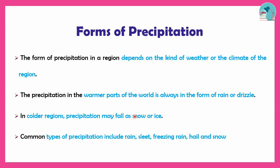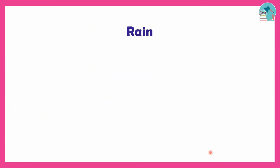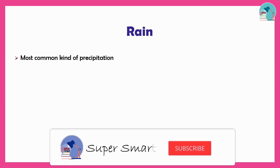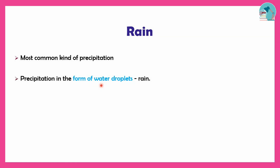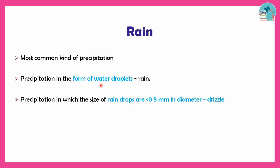Common types of precipitation are rain, sleet, freezing rain, hail, and snow. Rain is the most common kind of precipitation — it consists of main water droplets. A rain drop less than 0.5 mm in diameter is called drizzle; greater than 0.5 mm is rain.